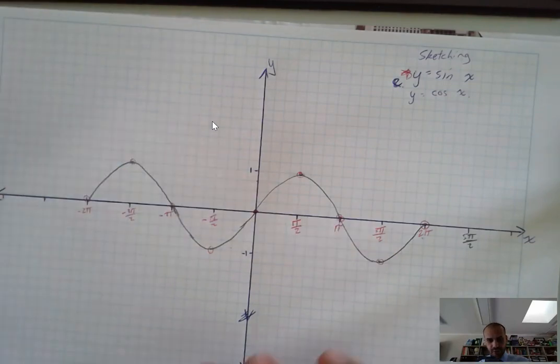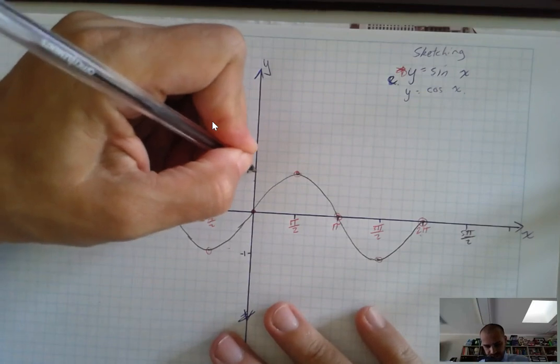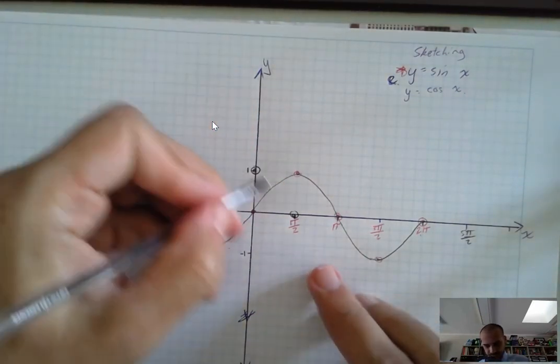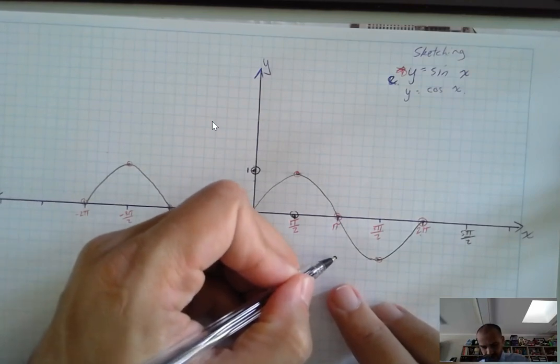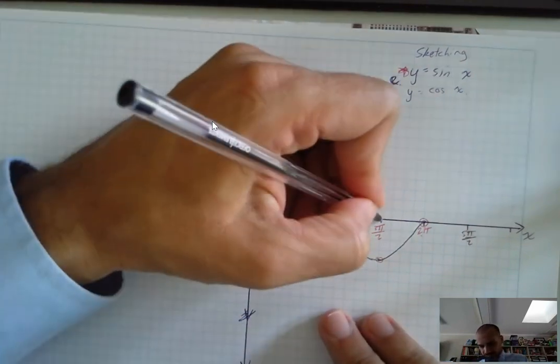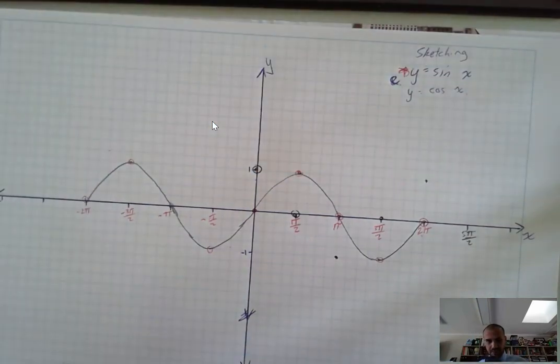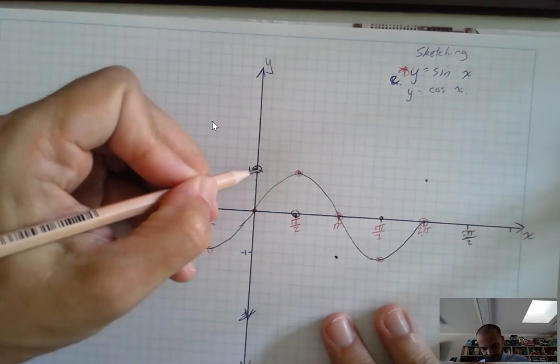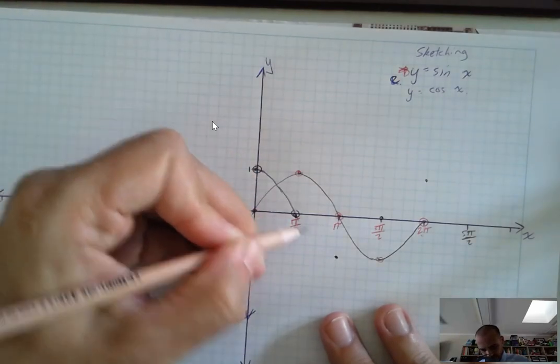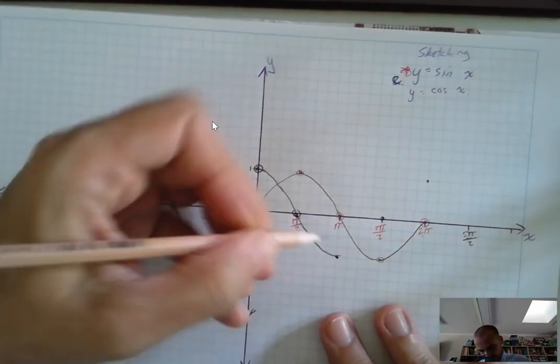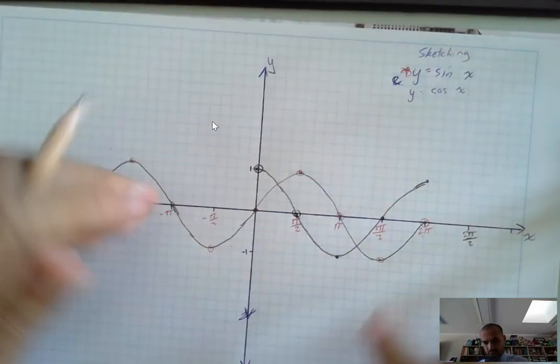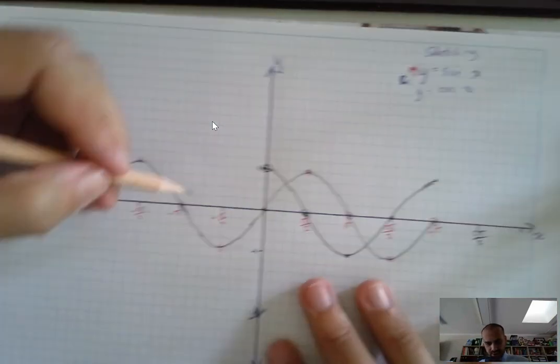So if I was to sketch that one, maybe use a different coloured pen. We start at one, we come down to here, we come down to there, there, and back up again. And I'll try to do my best to make it as smooth as possible. Not quite. Rub that out and fix it up.